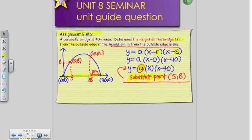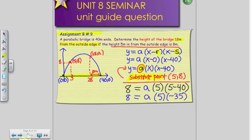So instead of y, I'm going to substitute the value 8 is equal to a times my x value. My x value is 5, and x minus 40 would just be 5 minus 40. So when you do that, 8 is going to be equal to a times 5 times negative 35. 8 is going to be equal to negative 35 times 5 is negative 175a.